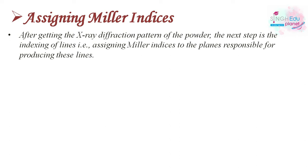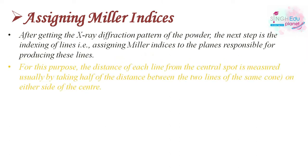After getting the X-ray diffraction pattern, the next step is indexing of lines — that means assigning indices to the different planes oriented in space that produce these lines. For this purpose, the distance of each line from the central spot is measured. We take half the distance between two lines from the same cone to find the distance from the central spot.